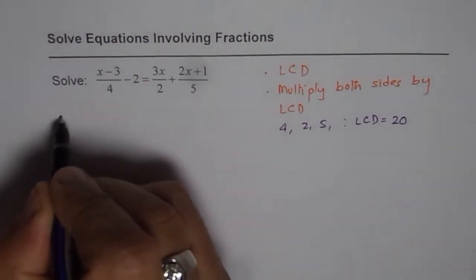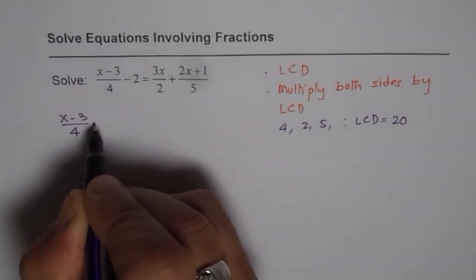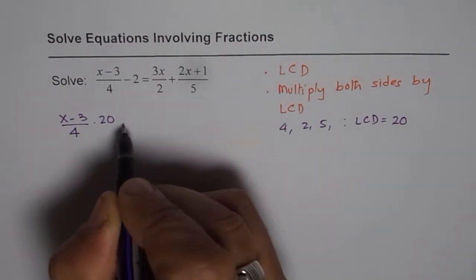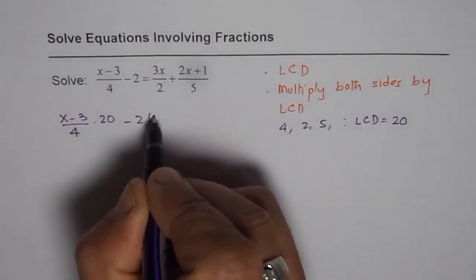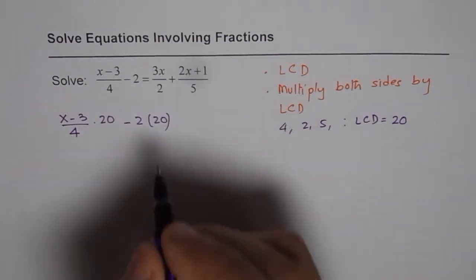So the equation here was (x minus 3) over 4. We can multiply this by 20 to get rid of the denominator. Minus 2 we can multiply this by 20. We have to multiply each and every term by 20.